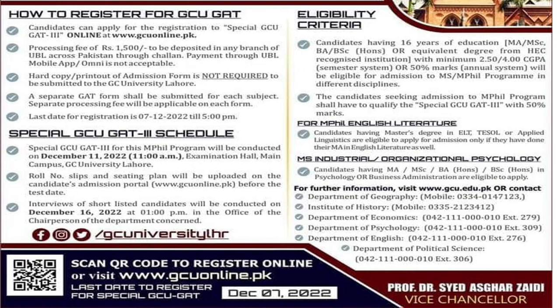Candidates can apply for registration to the special GCU GET online at www.gcu.edu. So you apply online — it is not a physical prospectus. A processing fee of Rs. 1500 is to be deposited in any branch of UBL across Pakistan through a Challan which will be generated by the website. You can also pay through UBL Mobile App.